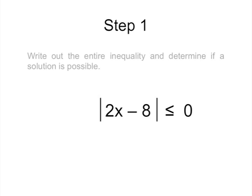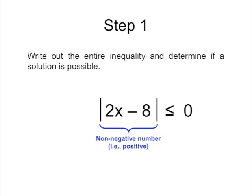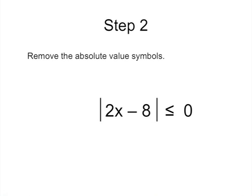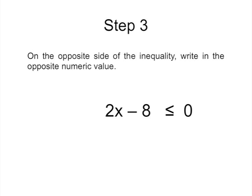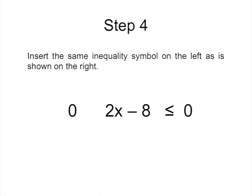Now let's try another simple example. The first step is to write out the entire equation and determine if a solution is possible. In this case, it is possible because a positive number is definitely less than or equal to 0. Next, and the real secret to solving absolute value problems, is to rewrite the inequality over again but without the absolute value symbols. Then, on the opposite side of the inequality, write in the opposite numeric value. In this case, the opposite value of 0 is 0. The next step is to insert the same inequality symbol on the left as shown on the right.